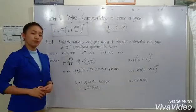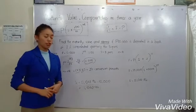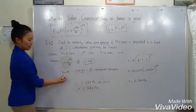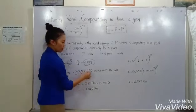The second step, you have to compute n. n is the total number of conversion periods. So n equals m times t, having the conversion period of 20.